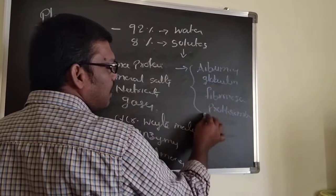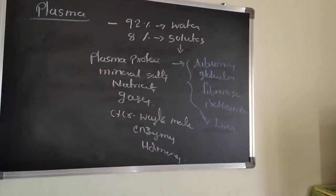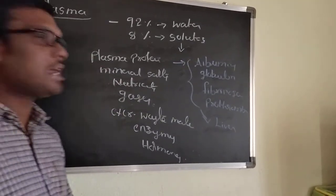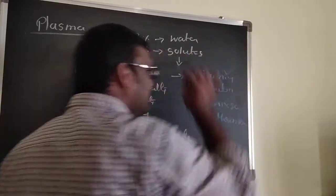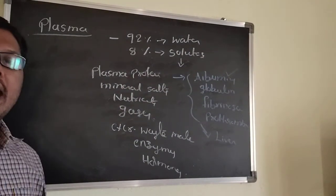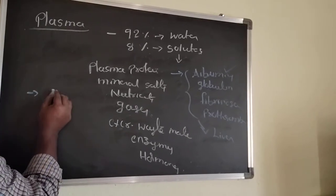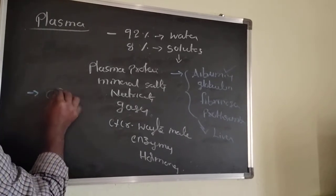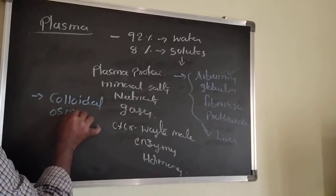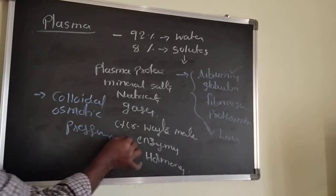All plasma proteins are produced from the liver. The most abundant plasma protein is albumin — it is the smallest protein. Albumin is mainly useful for maintaining colloidal osmotic pressure in our body.